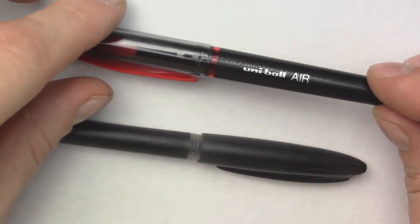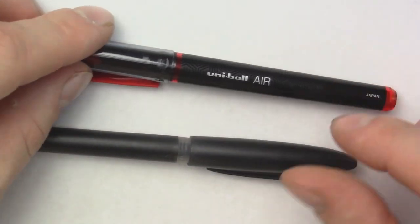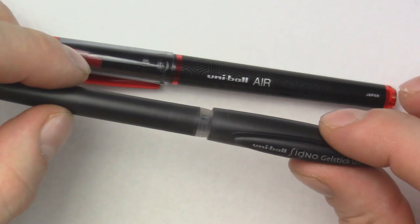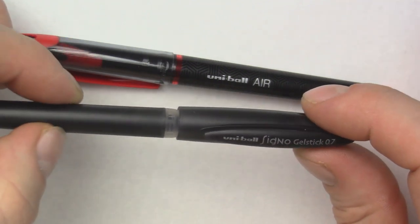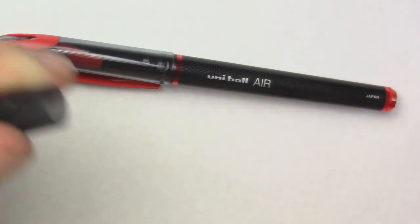The Uniball Air is a more expensive pen than the Uniball Signo Gel Stick 0.7, and we're going to do a comparison of these, see which one writes better, what the lines are like, and if there is any feathering.